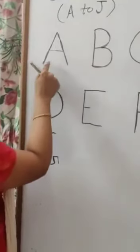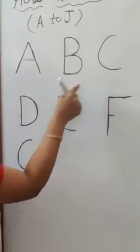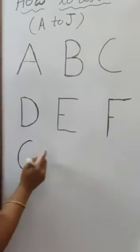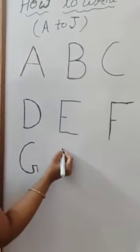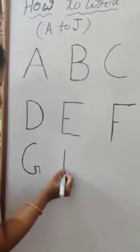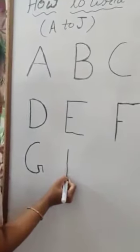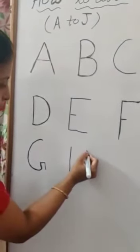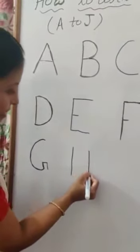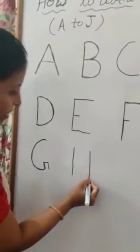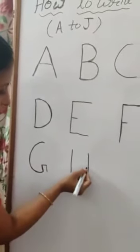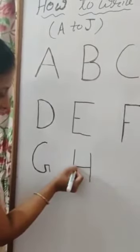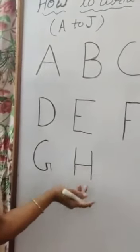A, B, C, D, E, F, G — now next letter is H. H is very simple: one standing line here and one standing line here, two standing lines, and between them one slipping line — makes H.